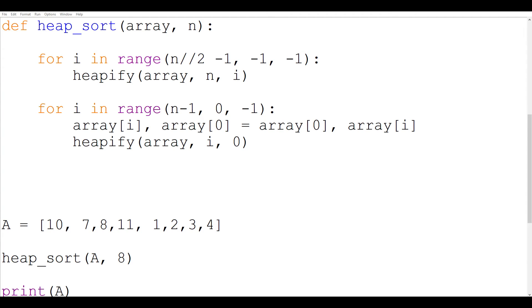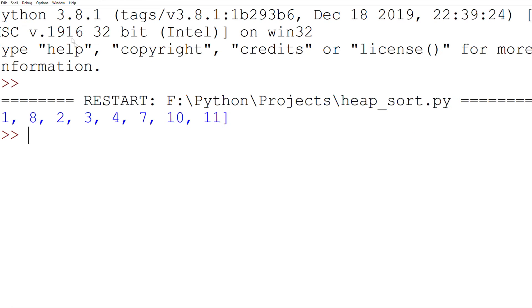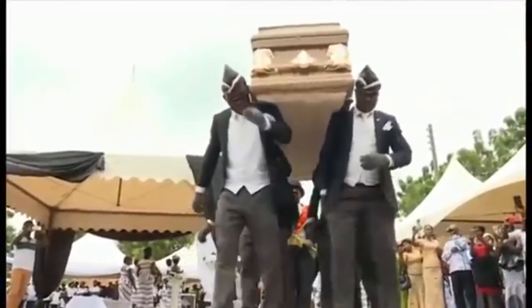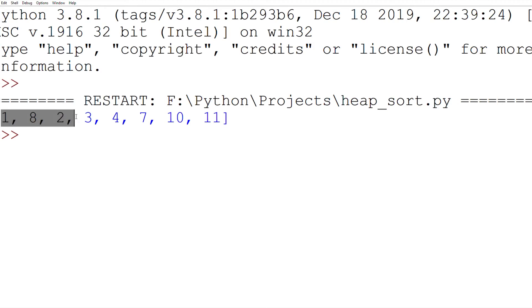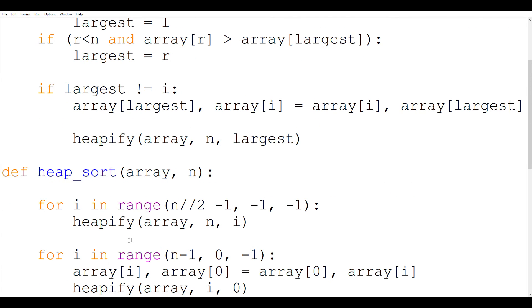And now if we run the program it should work. So we have got it. So we have got this array but it is not sorted. All the other elements are sorted but 8 is not in its correct position. So we have gone wrong somewhere. Let me check that.